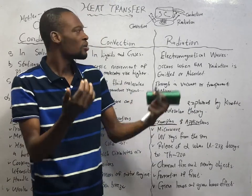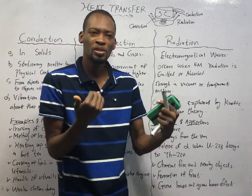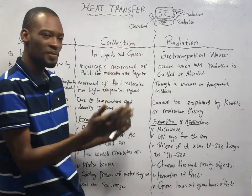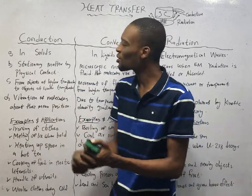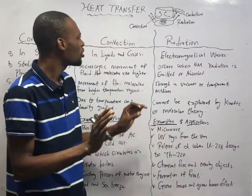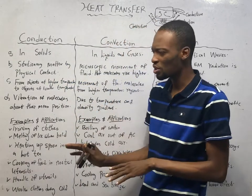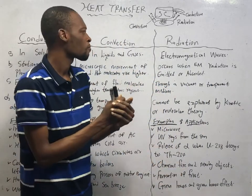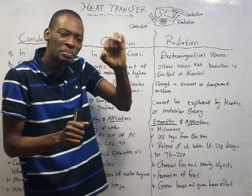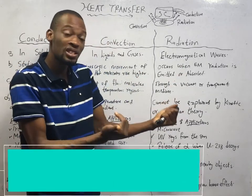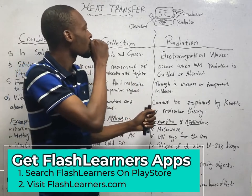Now that we know heat is a form of energy that flows due to temperature difference, how does heat move from one body to another? Before going into the various methods of heat transfer, it is important to know the difference between heat and temperature, as many people confuse the two. Heat is a form of energy which flows due to temperature difference, while temperature is the measure of energy — the degree of hotness or coldness of a body. Heat is energy itself, while temperature is the measure of that energy or heat.